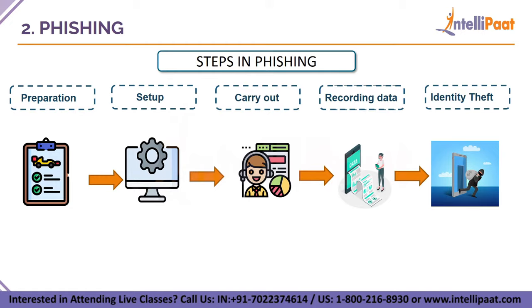The third phase of phishing is carry out — the fisher sends a bogus message that appears to be from a reputable source. The fourth step is recording data — the fisher keeps track of the information that victims enter into websites or pop-up windows. The last step is identity theft and fraud — fishers use the information they collect to make fraudulent transactions, and up to a quarter of victims never fully recover from a phishing attack.